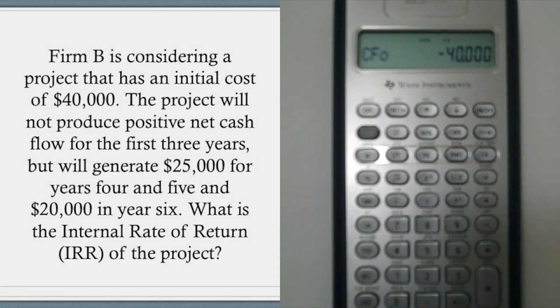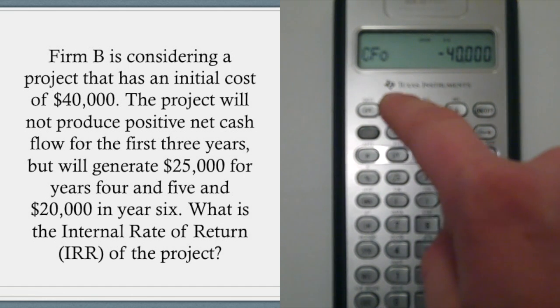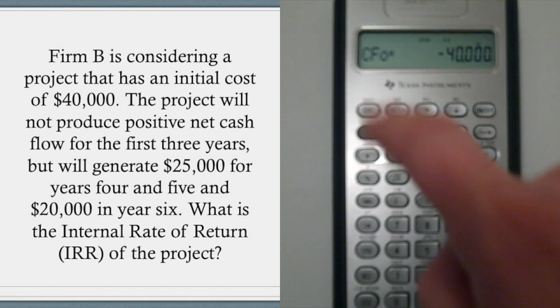So it says negative $40,000. And then once you do that, go ahead and lock it in by pressing enter here. Then we're going to go ahead and press down. Now it should say C01.